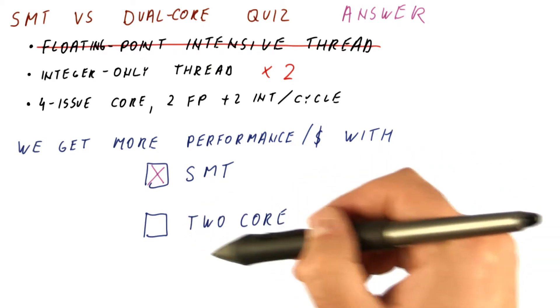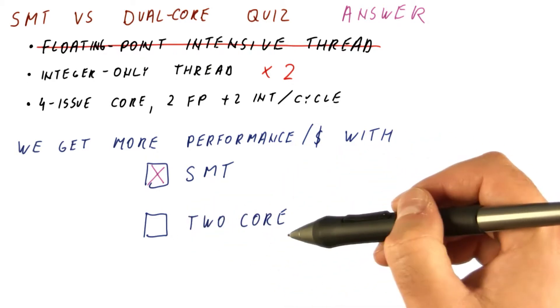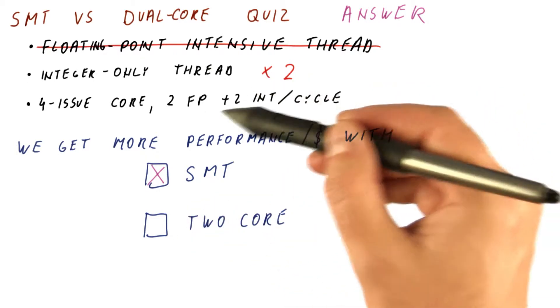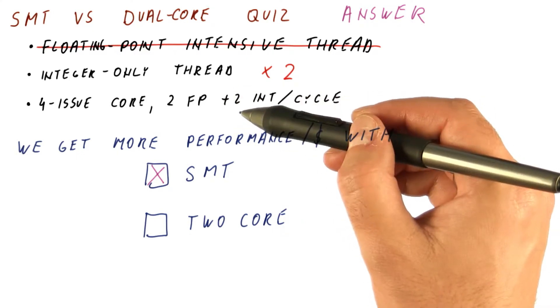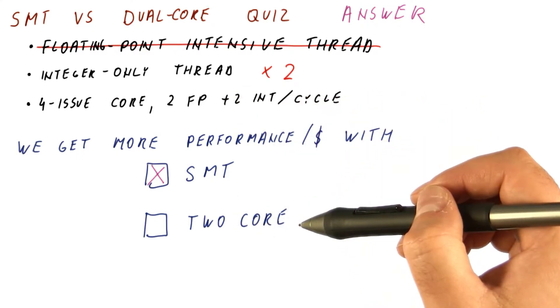In that case, the two core is slightly more cost effective because it gets the two issue performance in each core for twice the cost of one core.